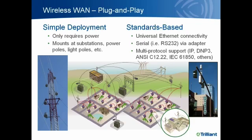One of the key benefits of a wireless WAN is its plug-and-play nature. It is not only simple to deploy — it only requires power and mounts on power poles, light poles, at substations — but is also standards-based.